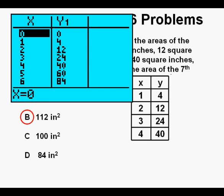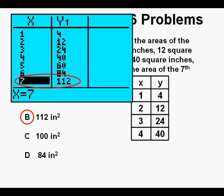Then to evaluate for the 7th figure, go to the table view by pressing 2nd, then GRAPH. Then scroll down to 7 for the 7th figure. And we see that for figure 7, we have 112 square inches, confirming that B is our correct answer.